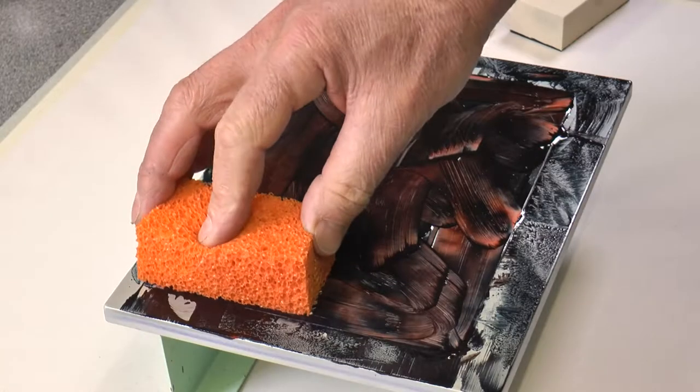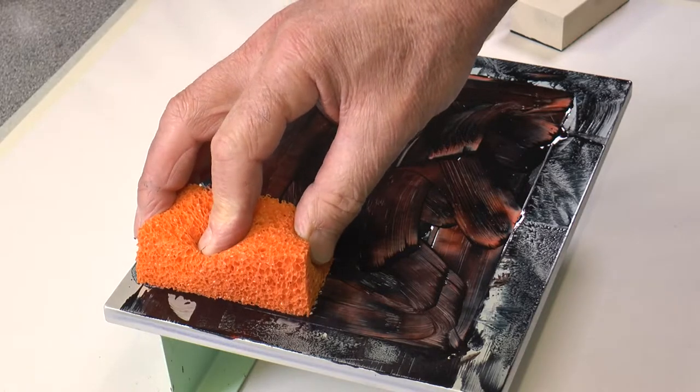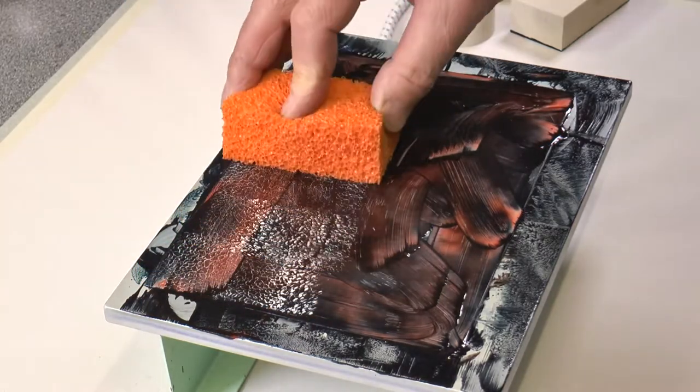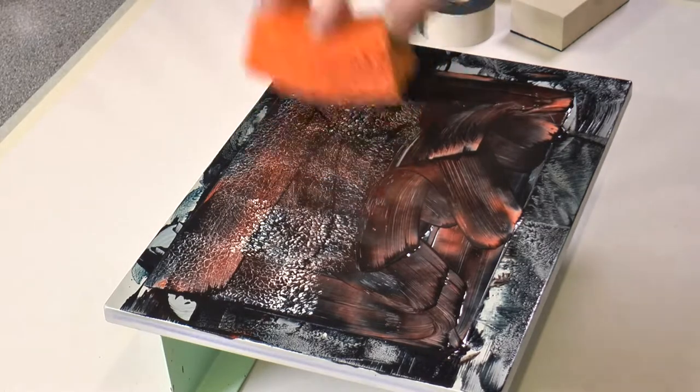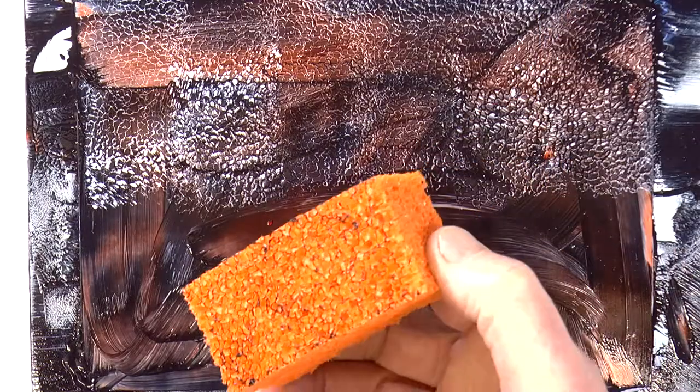The orange texture sponge, again, give it a little time to warm up. And then just place it and lift it to start evening out the wax that's there. This is a new one, so it's quite clean.